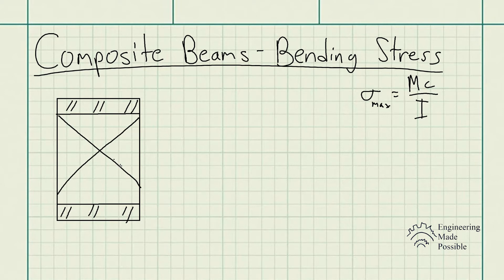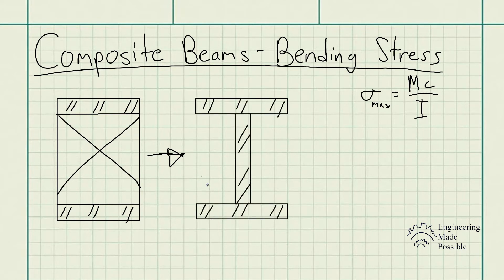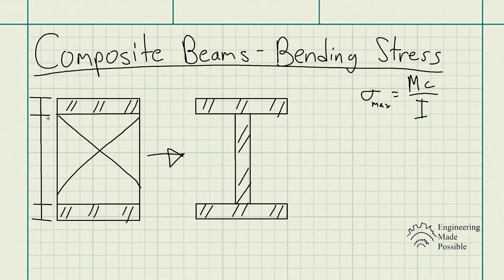The main method is to transform the composite beam into a uniform homogeneous beam. You essentially represent the wood's properties with the equivalent of the stronger material — in this case, steel. You keep the same dimensions from top to bottom as constant dimensions.